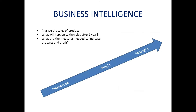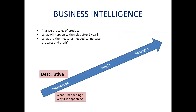Business intelligence divides analysis into three types. The first is descriptive analysis — what is happening and why it is happening. For example, with a solar system company, descriptive analysis tells you what they are doing: providing solar power to many houses, how many installations they've done, in which locality they've given the most, and which are their top 10 big clients.